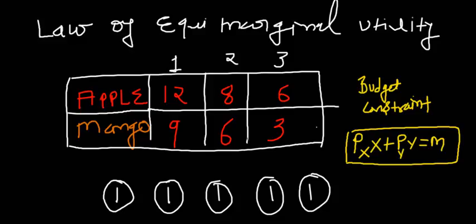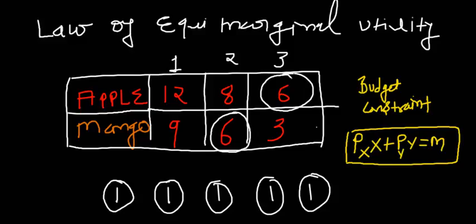To find a common measurement of utility for apple and mango, we look for a common number. Consuming 3 units of apple gives 6 utils, and consuming 2 units of mango also gives 6 utils. So the consumer gets 3 apples and 2 mangoes at the same level of satisfaction — 6 utils each — which means the law of equi-marginal utility is satisfied.